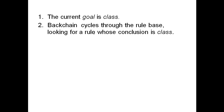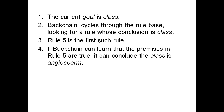Backchain cycles through the rules looking for a rule whose conclusion is 'class.' Looking through the rule base, the first such rule is rule five. It concludes that class is angiosperm. If backchain can learn that the premises in rule five are true, it can conclude that class is angiosperm.